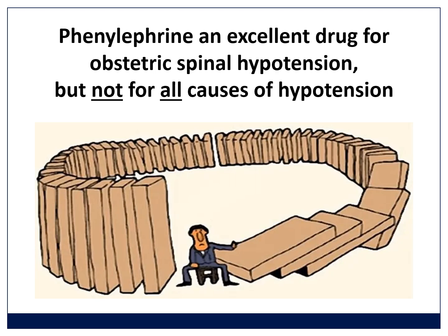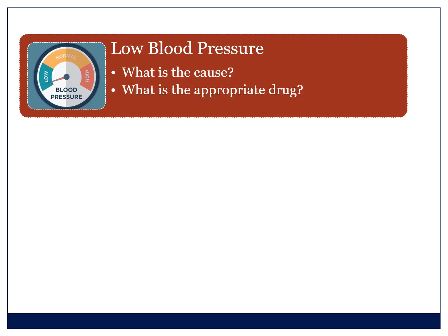That brings us to something called the law of unintended consequences. We found that people are using phenylephrine outside of its indication, which is obstetric spinal hypotension or just spinal hypotension. So when you see low blood pressure during an anesthetic, the first thing you have to think is: what is the cause of the hypotension? Once you are aware of the cause, what would the appropriate drug be to treat it? For the different causes, one would choose different drugs, usually in combination with fluid therapy.